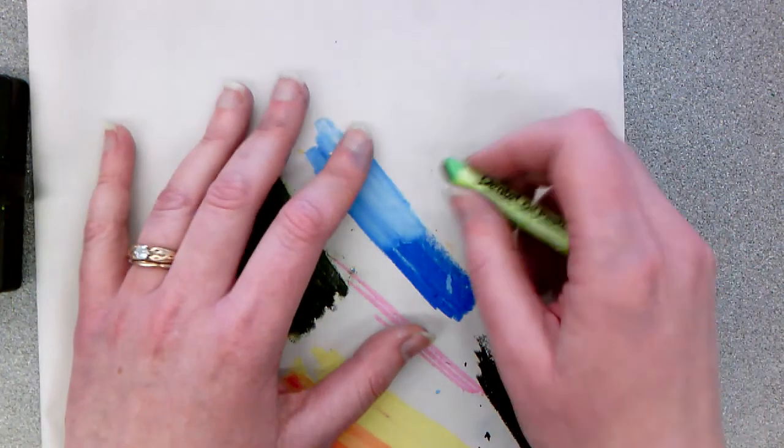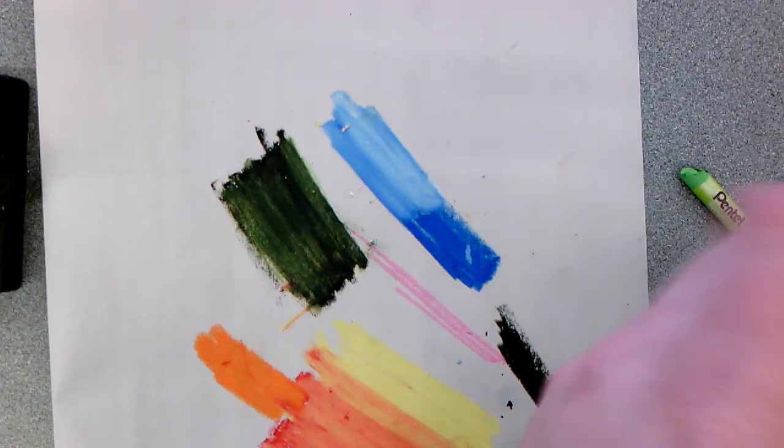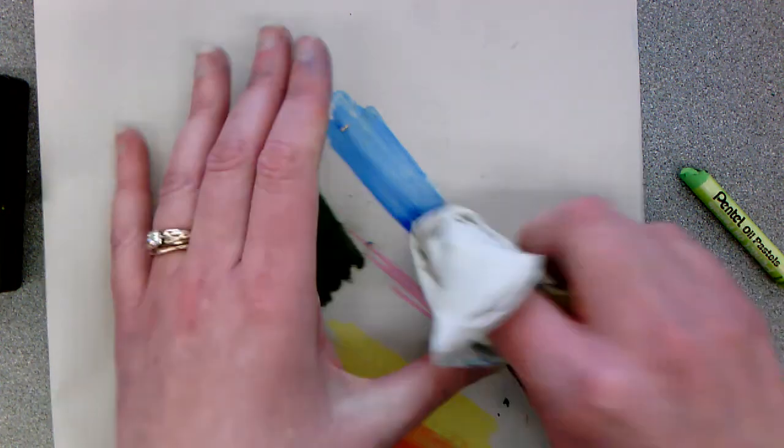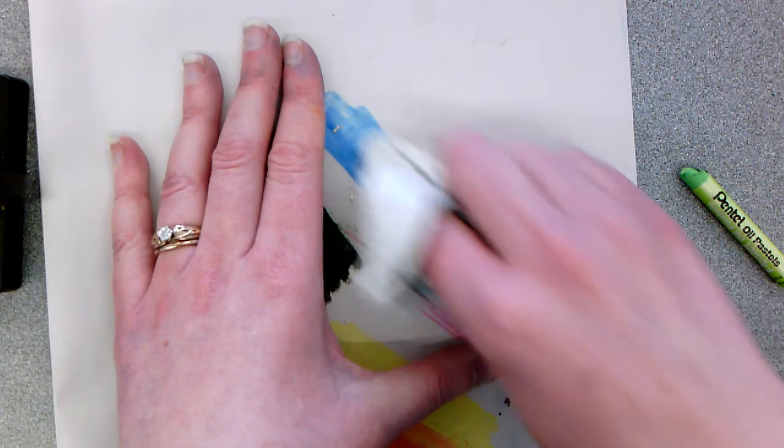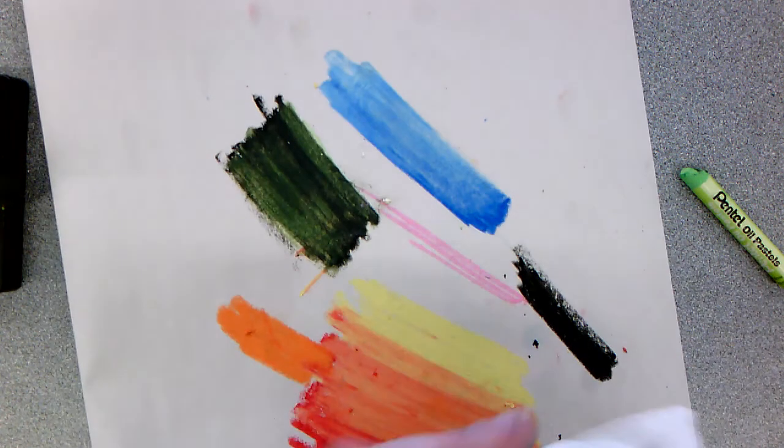With how it goes on, you can take a paper towel, and it has a small amount of blend to it. So you can blend it together a little bit.